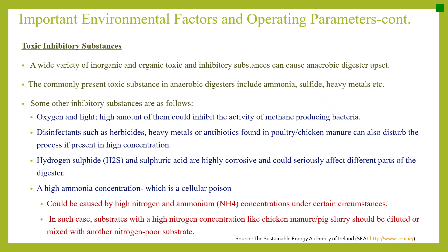Toxic and inhibitory substances. A wide variety of inorganic and organic toxic substances can cause anaerobic digester upset. Commonly present toxic substances include ammonia, sulfide, and heavy metals. Oxygen in high amounts can inhibit methane-producing bacteria. Disinfectants such as herbicides, heavy metals, or antibiotics found in poultry or chicken manure can disturb the process at high concentrations. Hydrogen sulfide and sulfuric acid are highly corrosive and can seriously affect the digester. High ammonia concentration — a cellular poison — can result from high nitrogen and ammonium concentrations. In such cases, high-nitrogen substrates like chicken manure or pig slurry should be diluted or co-digested with a nitrogen-poor substrate.